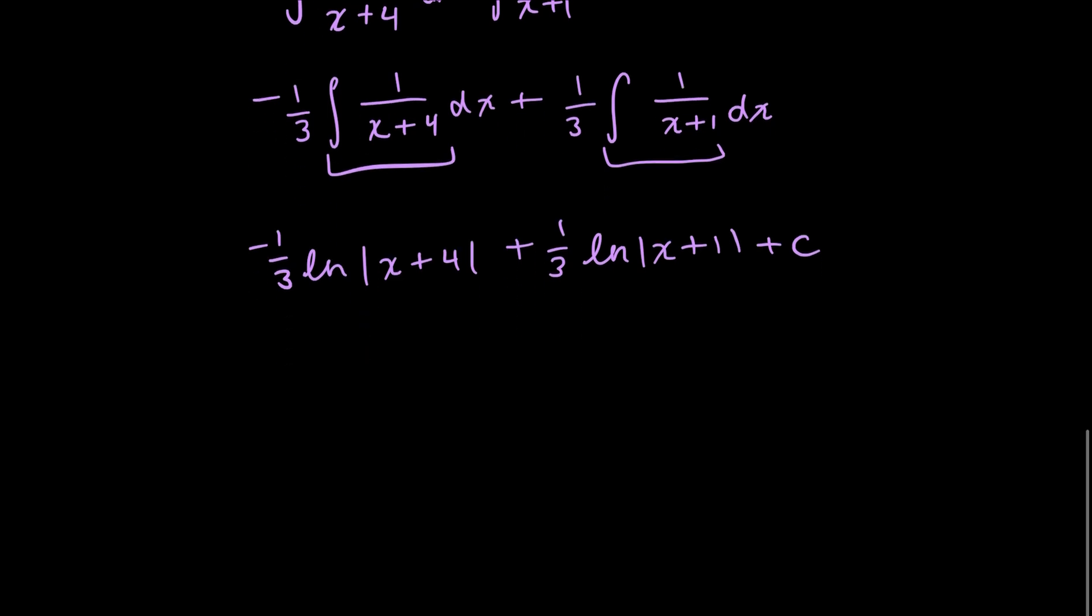But you could write this in a nicer way. Using your log properties, you can combine this into one logarithm. So you have, because this is a negative, this term is going to be in the bottom and can be put into one fraction inside that log.